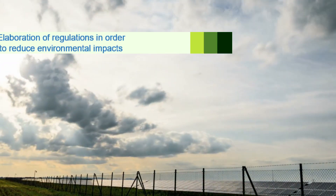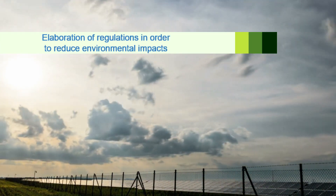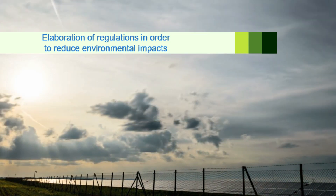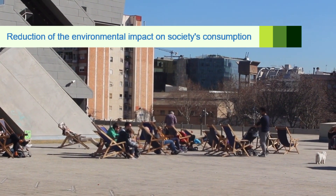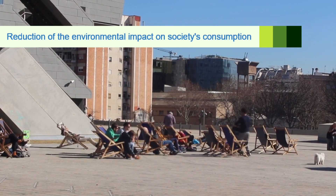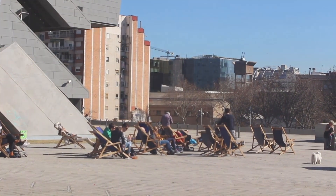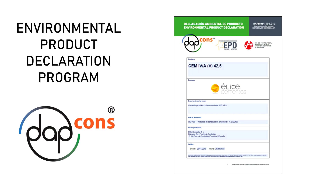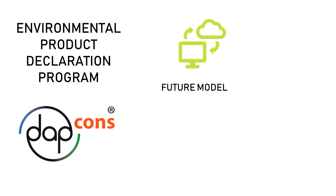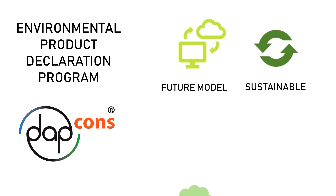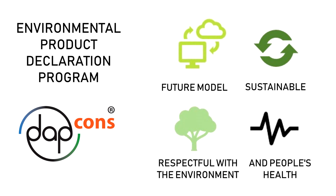On one hand, administrations are increasingly pursuing the reduction of impacts with the development of regulations, and on the other hand, society is more involved in consuming goods and services with less impacts. Therefore, the Environmental Product Declaration Programme is a very useful tool to promote the transformation of the construction sector towards a future model that is sustainable and respectful with the environment and people's health.